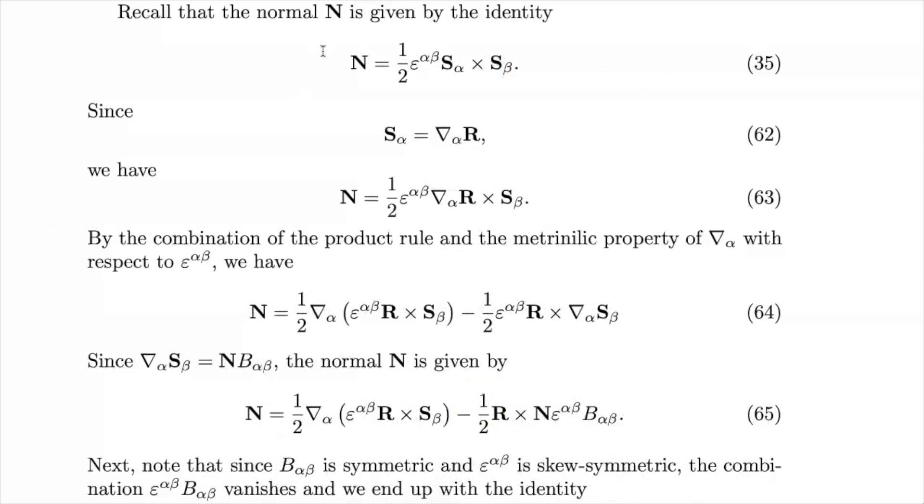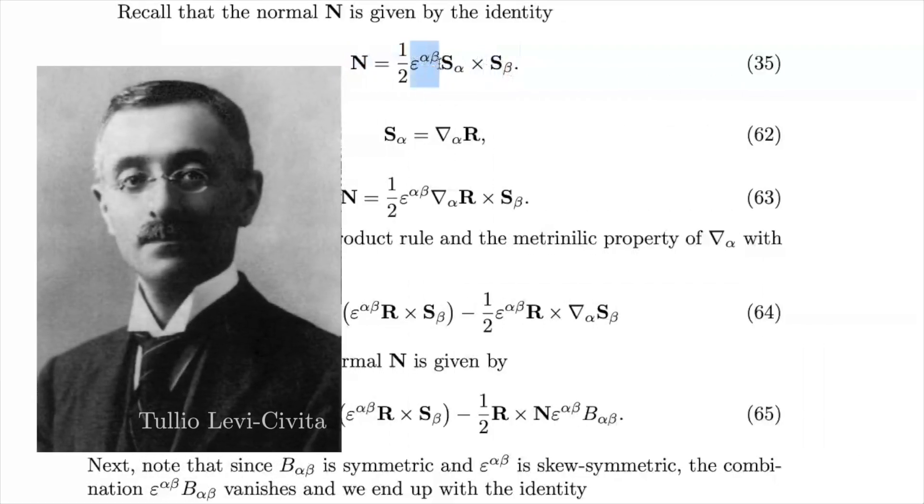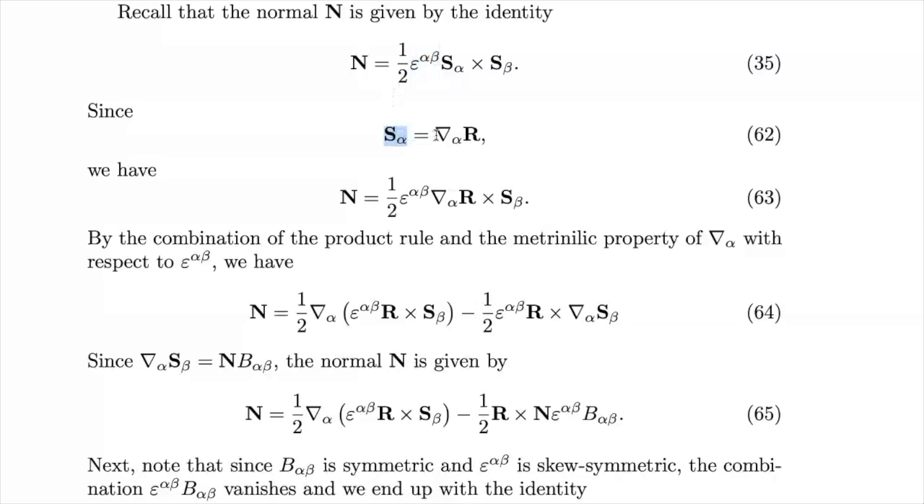The key to the entire derivation is this tensor expression for the unit normal. Now, as you know, the unit normal can be calculated with the help of a cross product of any two linearly independent vectors in the tangent plane. And this elegant expression uses the elements of the surface basis. And what you should know about this object, known as the Levi-Civita symbol, is that it is represented by a two-by-two skew-symmetric matrix. Now, the elements of the basis are the surface derivatives of the position vector. So we now have this expression for the unit normal.